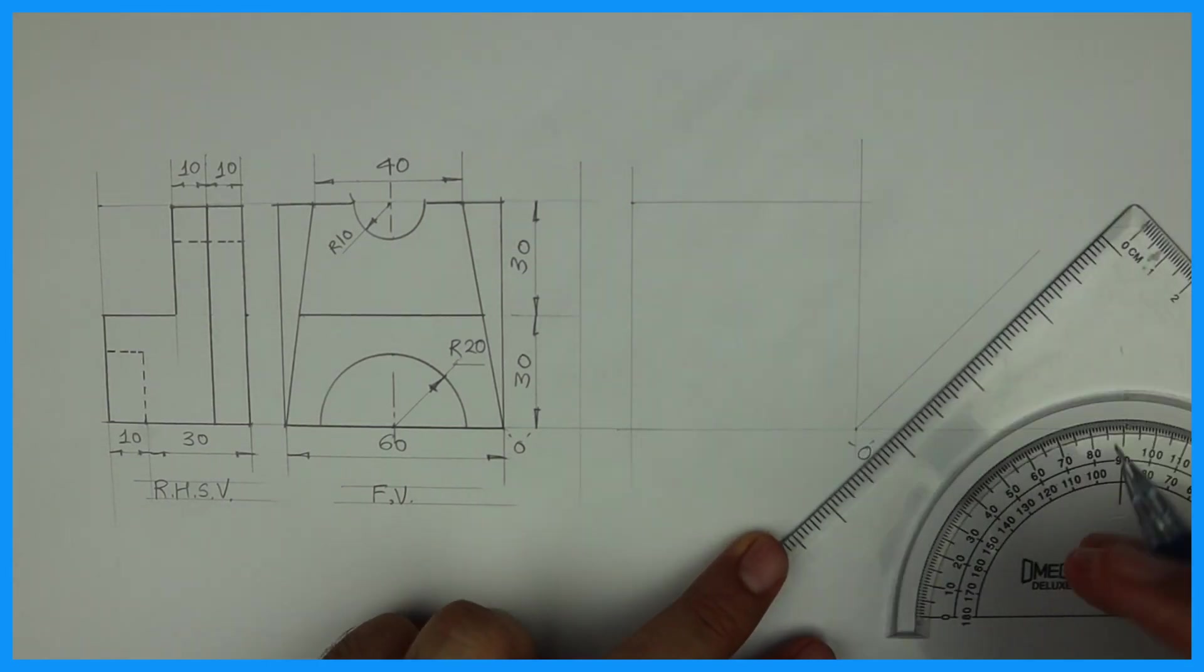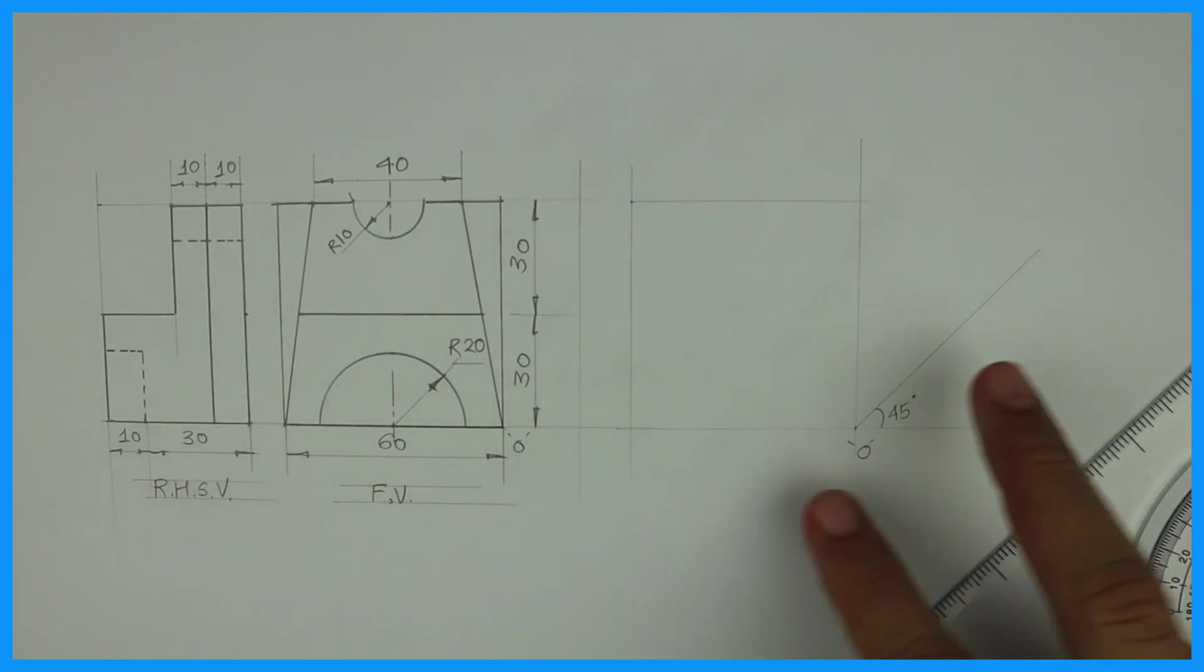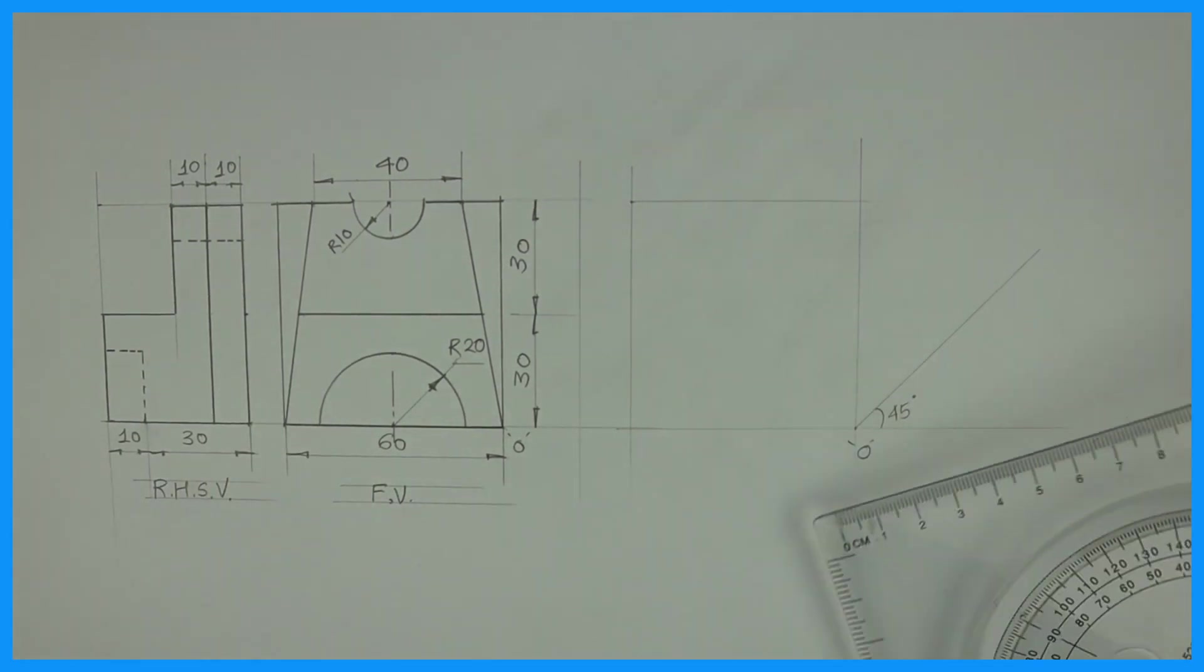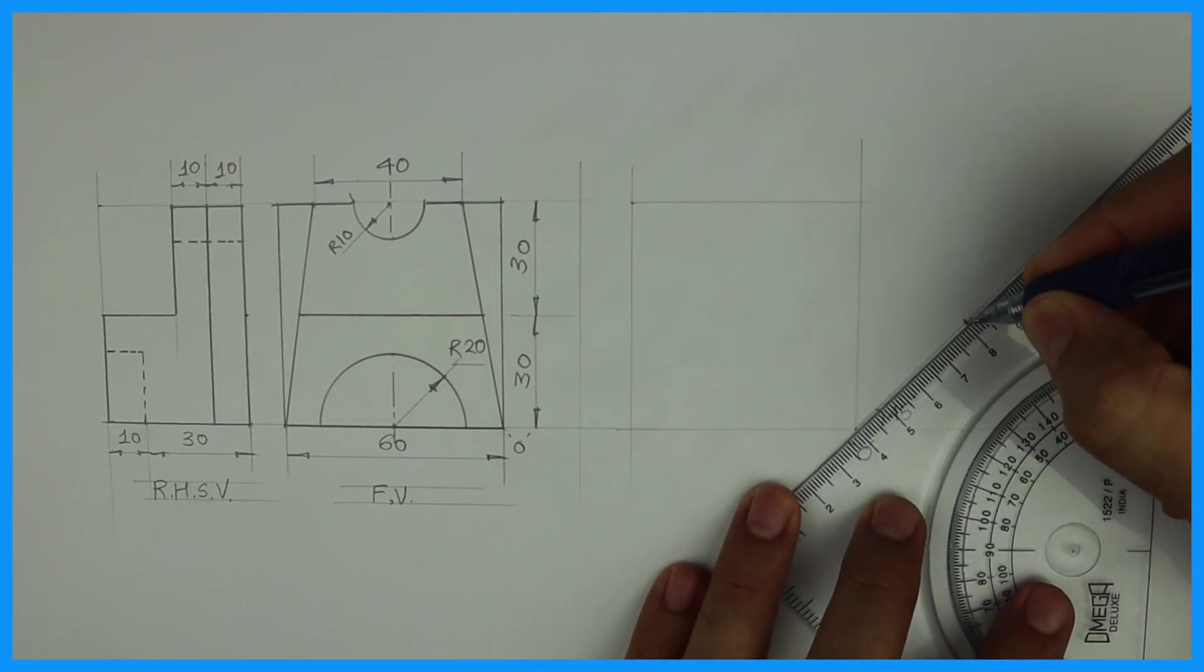Then we will take receding angle 45 degrees. We can take 30 degrees also if it is given in the question. We take width 40.